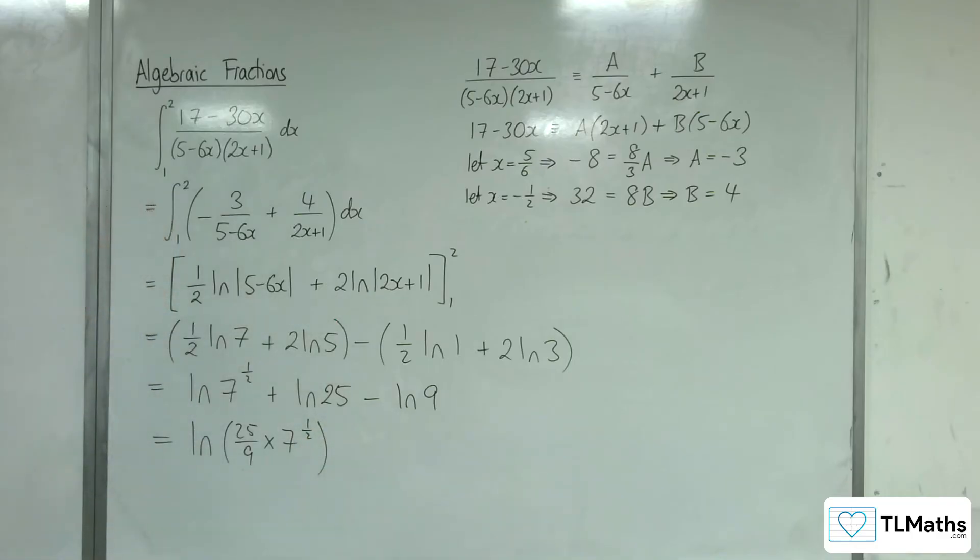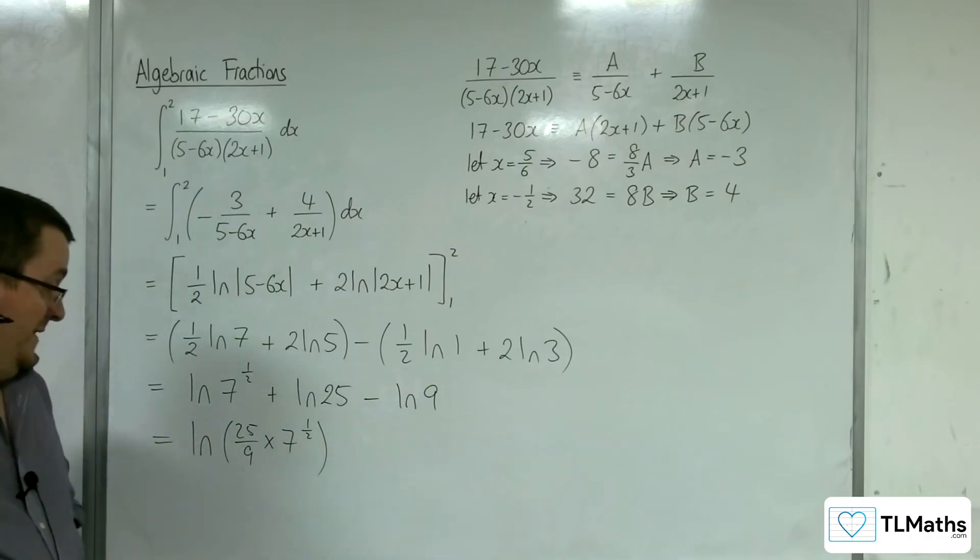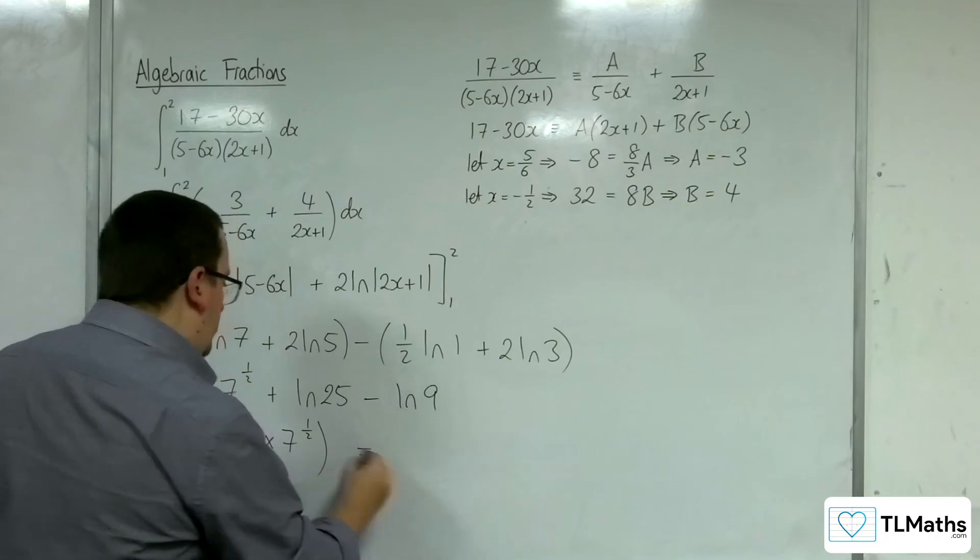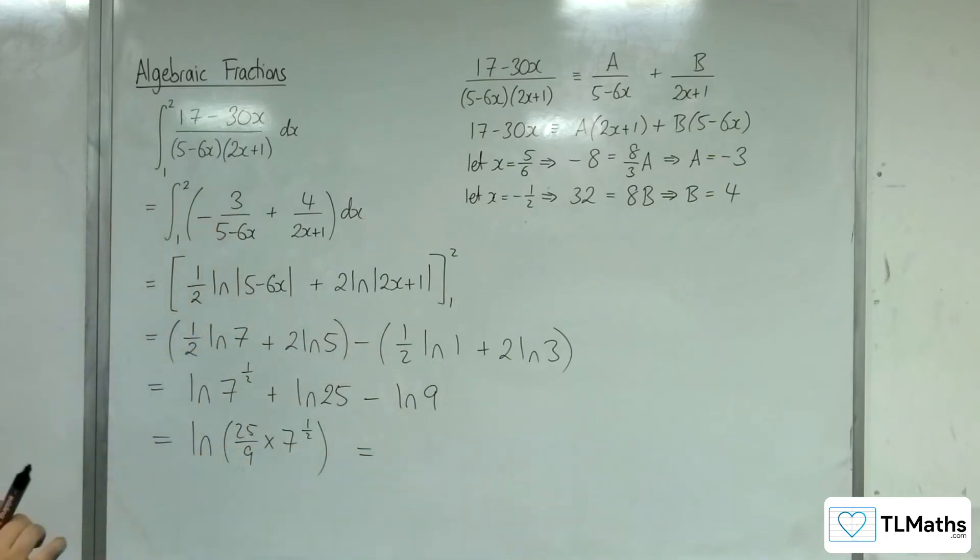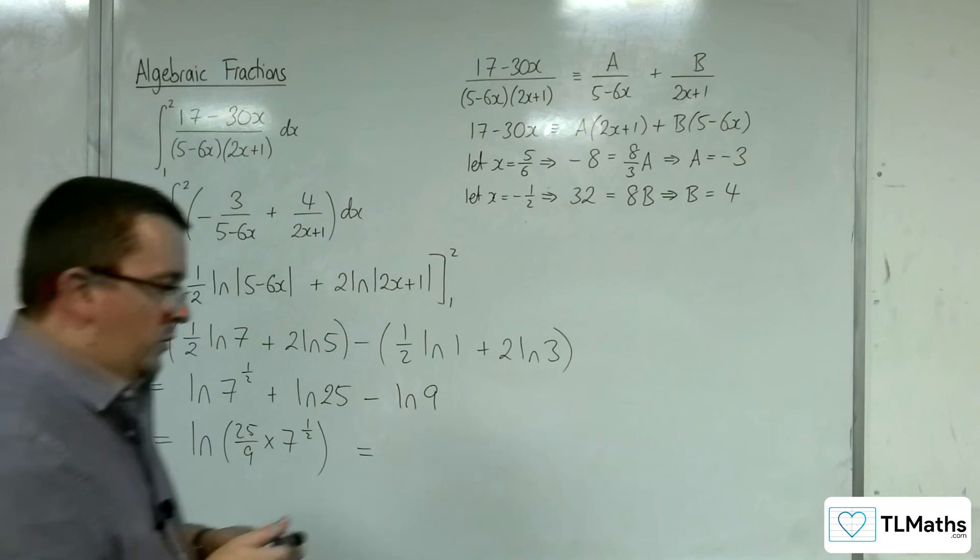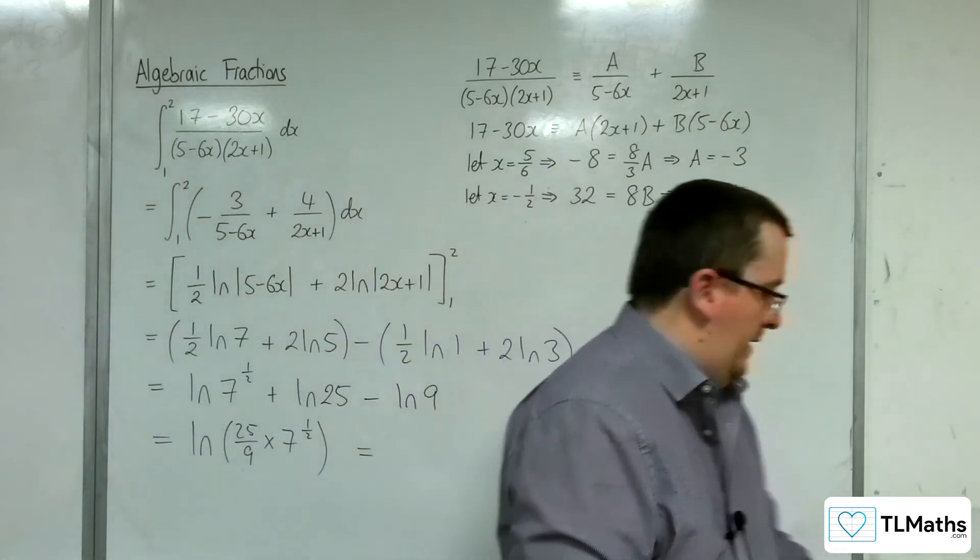Okay. I'm wondering if I can really write that in a nicer way. I mean, I can't obviously multiply 25 ninths by 7, but if we write it like this.